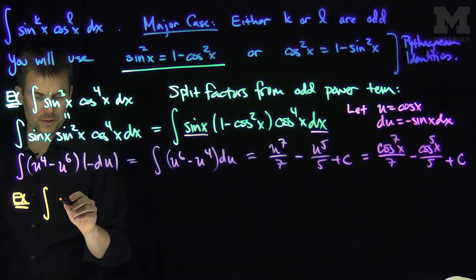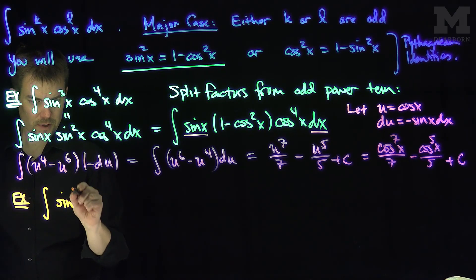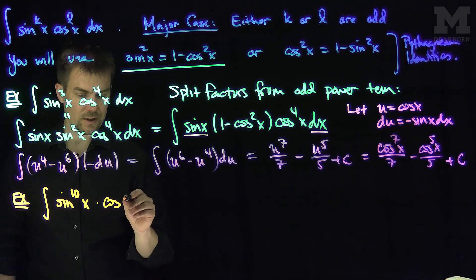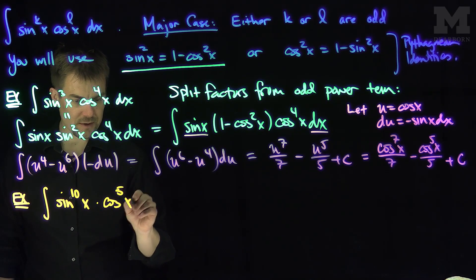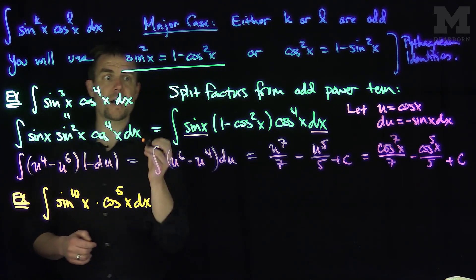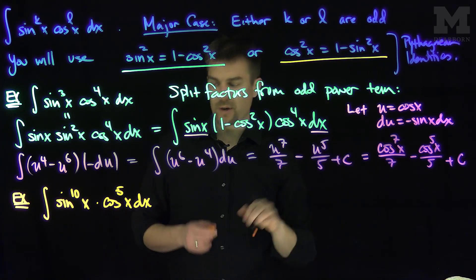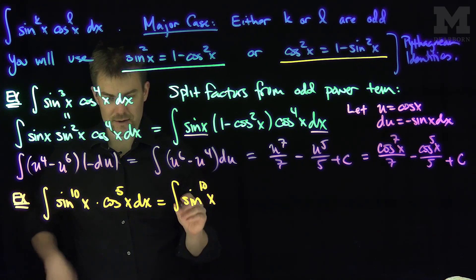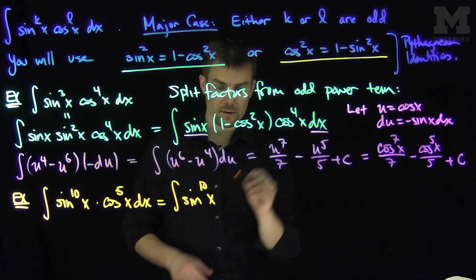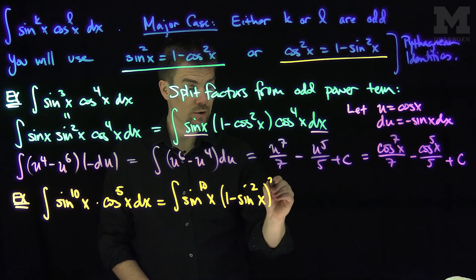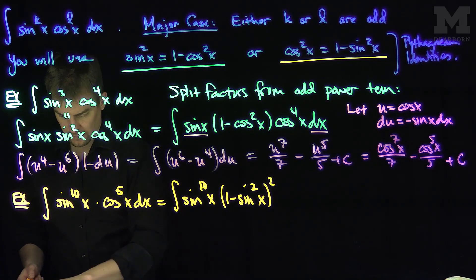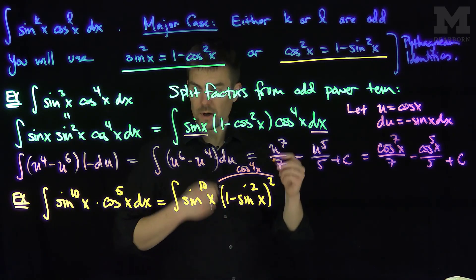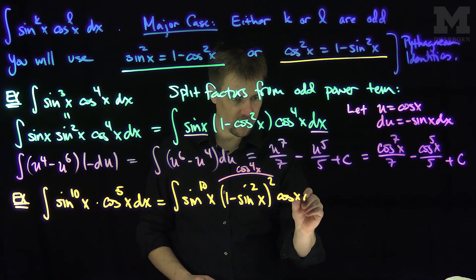Let's look at another example: the integral of sine to the tenth of x times cosine to the fifth of x dx. The cosine has the odd power, so we split from that. We write this as the integral of sine to the tenth of x times cosine to the fourth of x times cosine of x dx. Now cosine to the fourth equals (1 minus sine squared of x) squared, so we replace that term accordingly.